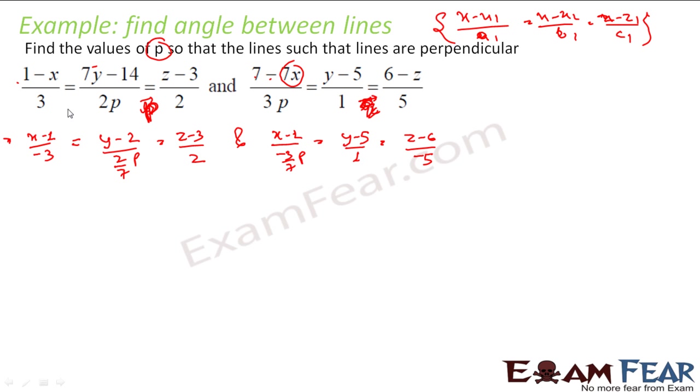Don't solve the question in haste. First thing you have to make sure that the equation that is given is in this pattern: x minus x1 by a1, y minus y1 by b1, z minus z1 by c1, where x1, y1, z1 are the points that the line passes through and a1, b1, c1 are the line vectors which this line is parallel to.